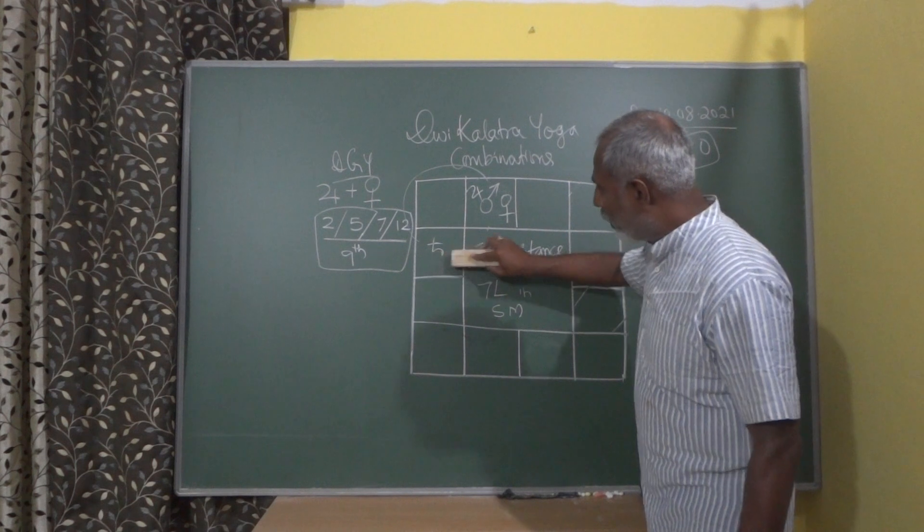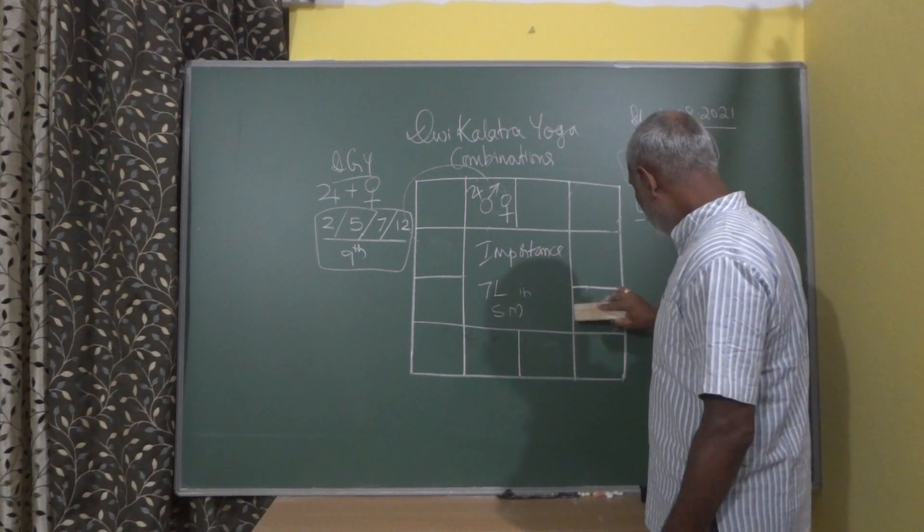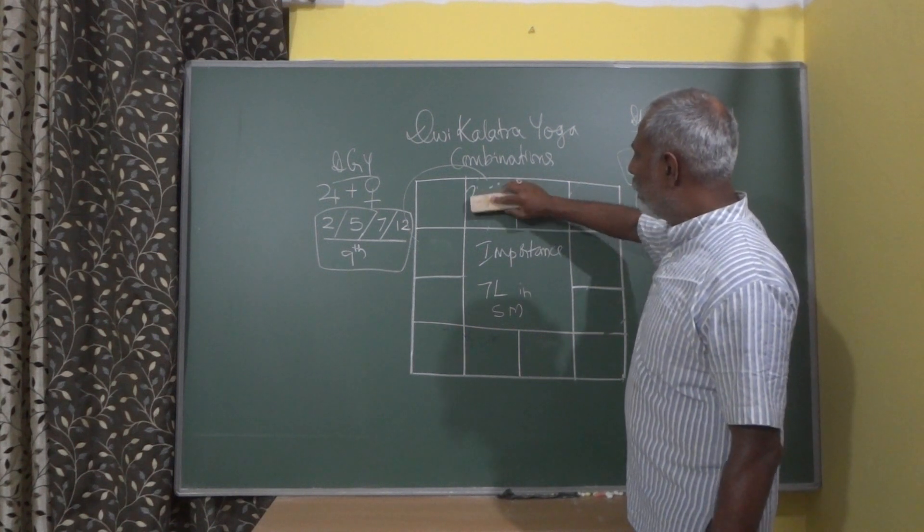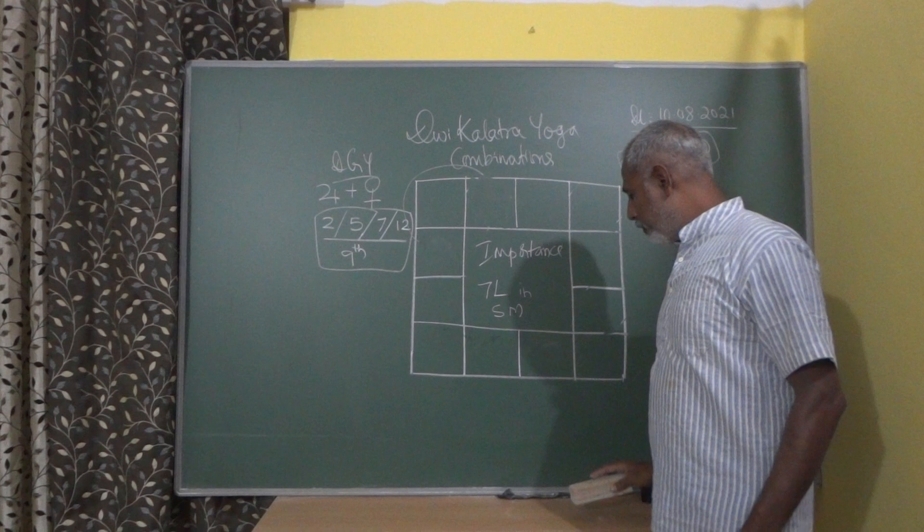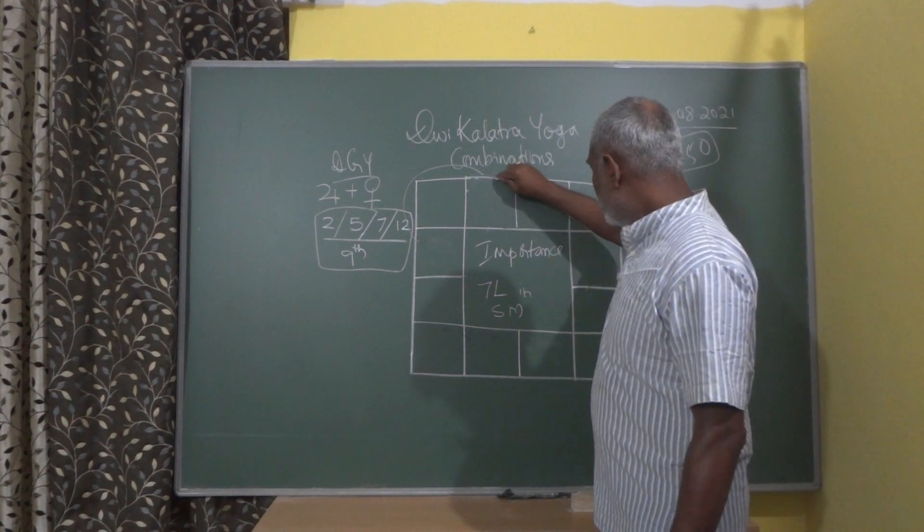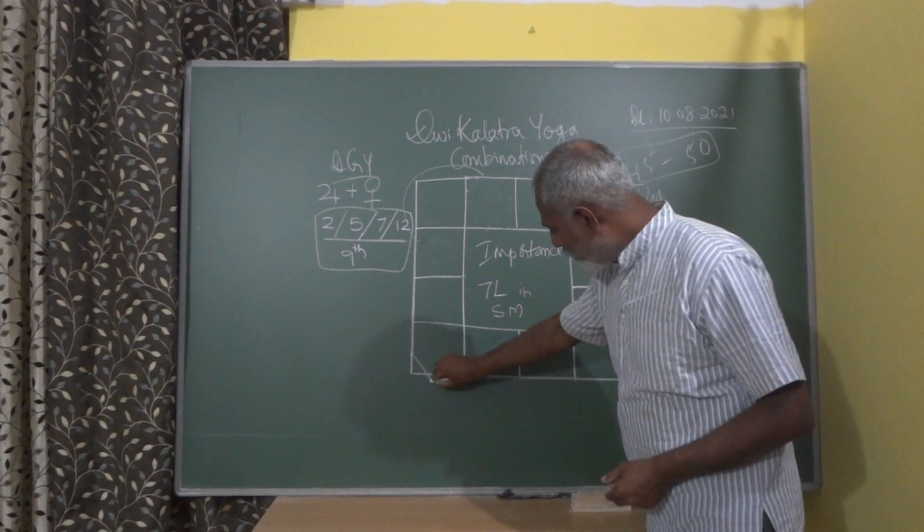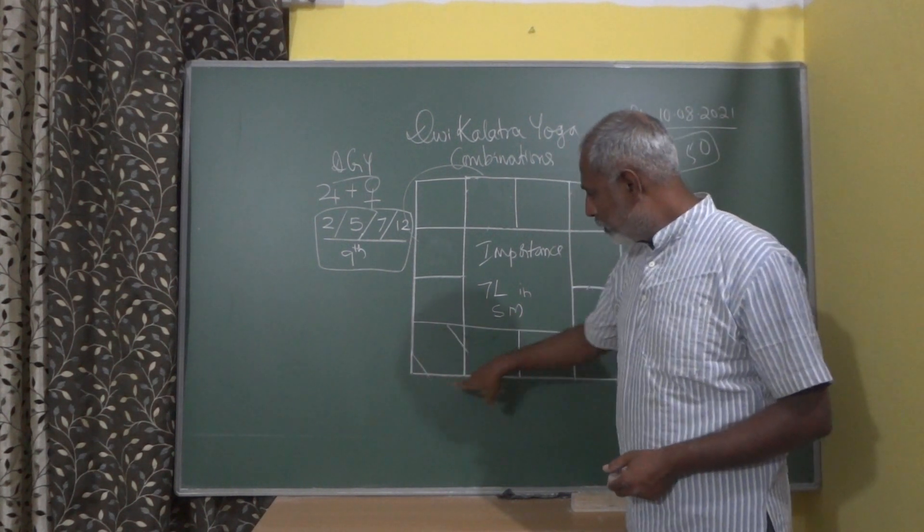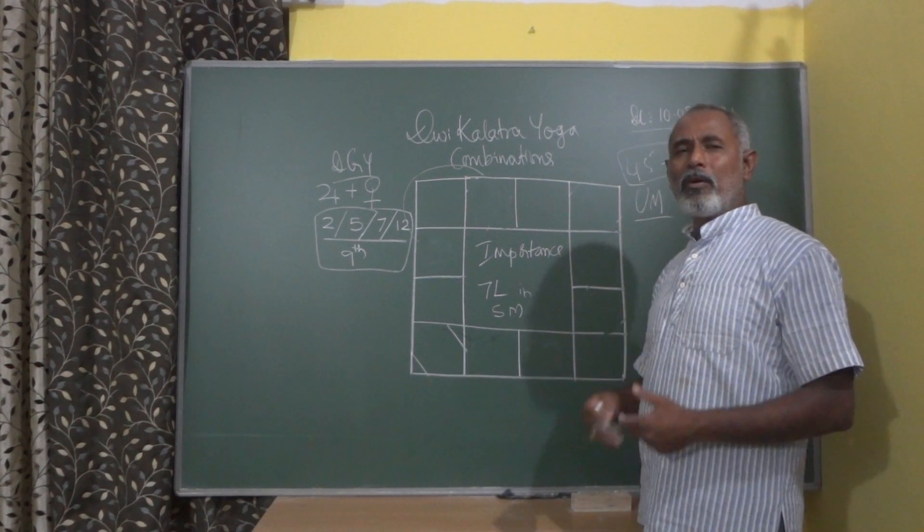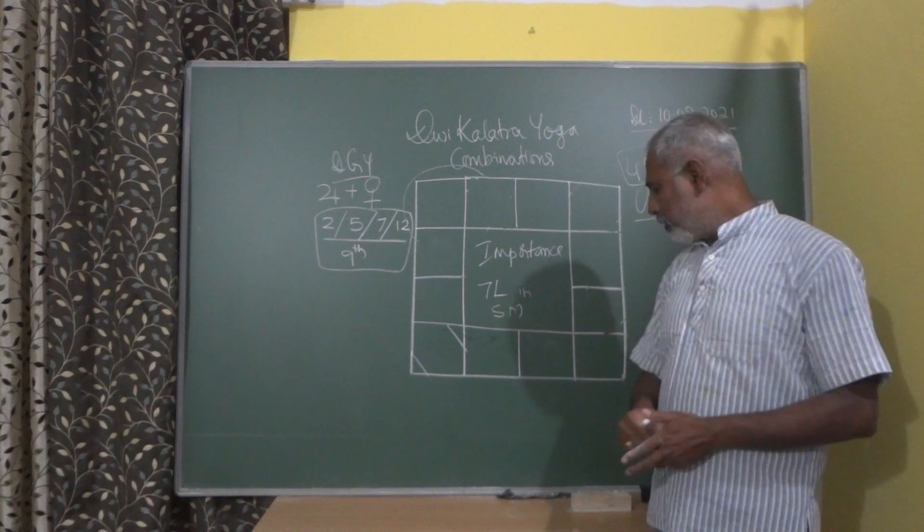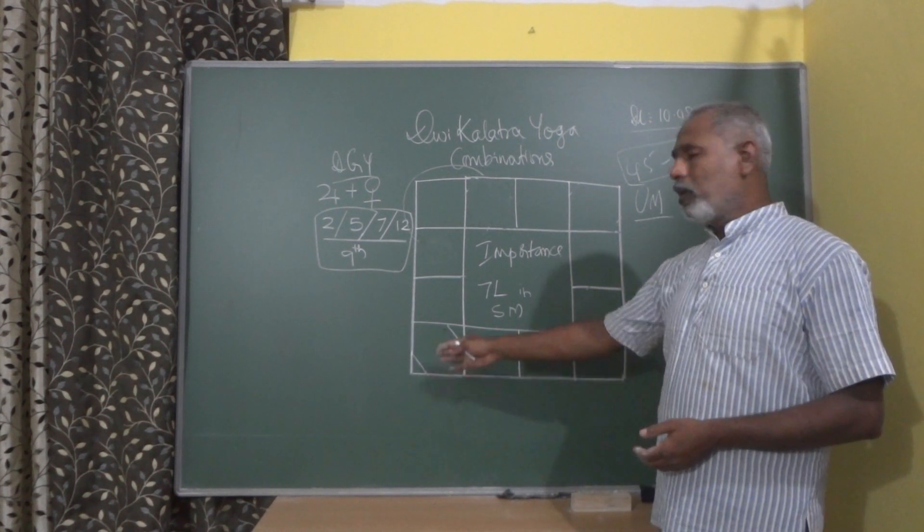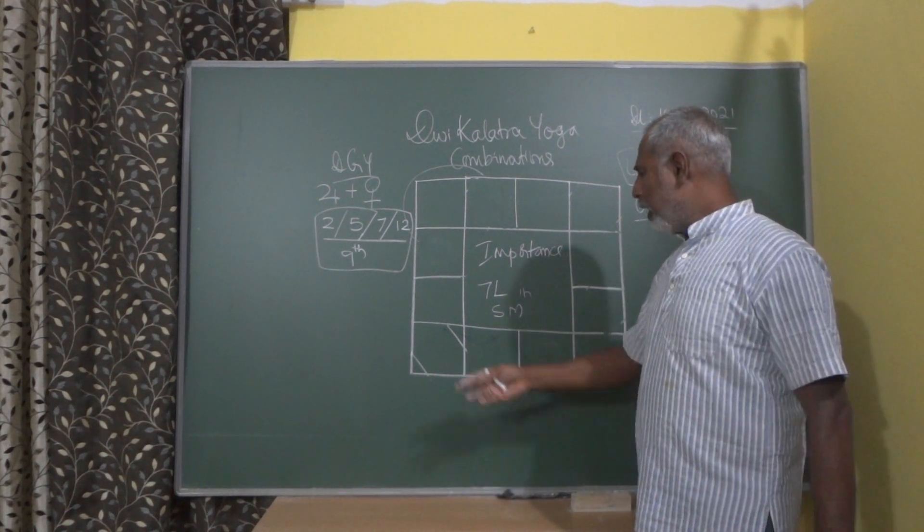So let us go into one more. I think I have time for one more. I will just do one more ascendant and then we will see what we can do about it. Let us take another ascendant. This is a difficult ascendant for marriage, Sagittarius, because Sagittarius we always give a lot of weightage and respect for Sagittarius ascendant. Why? Because these people are having utmost patience.